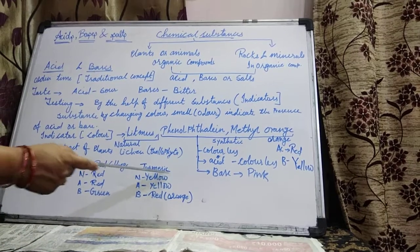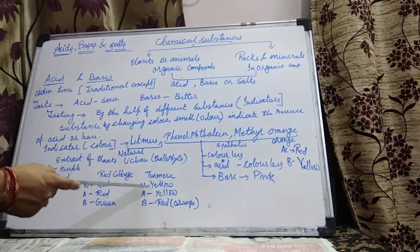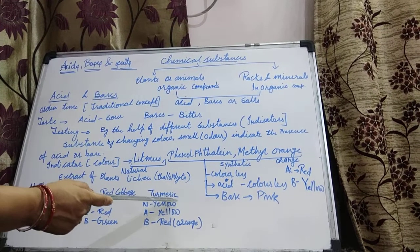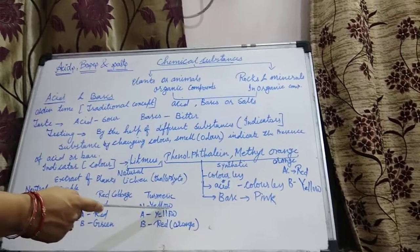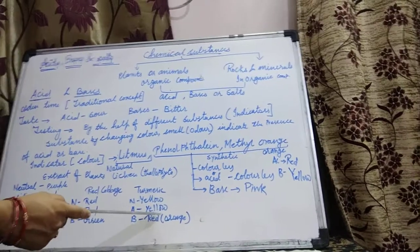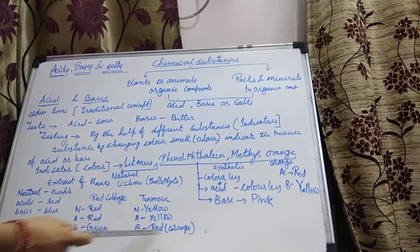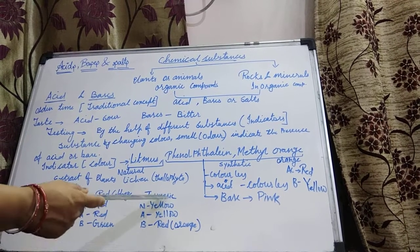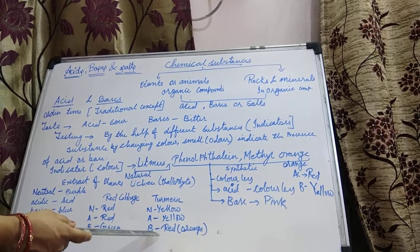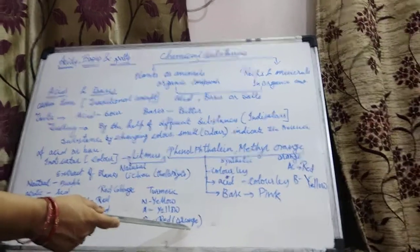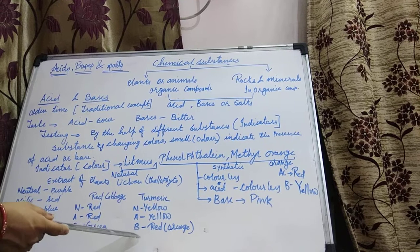One more natural indicator is turmeric powder. It can also help in identifying acids and bases. In neutral medium, turmeric is yellow — the haldi we use in our homes. In acidic medium, it remains yellow; it does not change color with acid. But in base, it changes its color to red or dark orange. For example, if you sprinkle turmeric powder on a cloth and wash it, it stays yellow. But as you apply soap — which is basic — that cloth becomes red or orange. So if turmeric powder changes to reddish orange, that particular substance is a base.